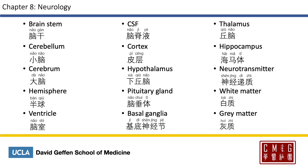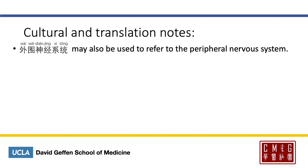CSF is 脑脊液. The cortex is 皮层. Hypothalamus is 下丘脑. Pituitary gland is 脑垂体. Basal ganglia is 基底神经节. Thalamus is 丘脑. Hippocampus is 海马体. Neurotransmitter is 神经递质. White matter is 白质, and gray matter is 灰质. We mentioned that 周围神经系统 is the translation for peripheral nervous system; we may also hear 外围神经系统 to mean the same thing.